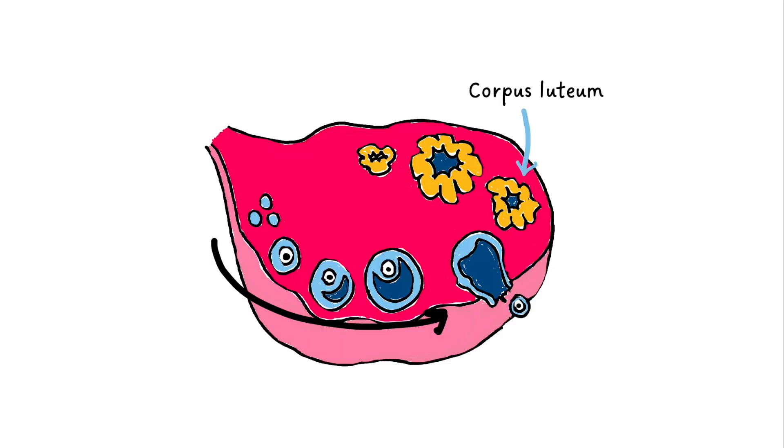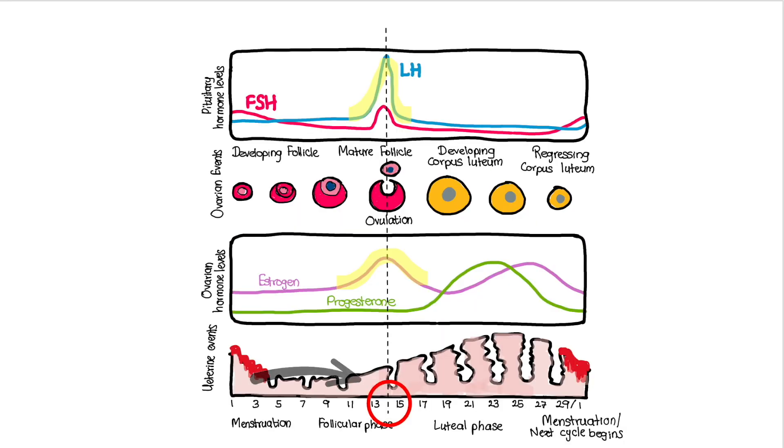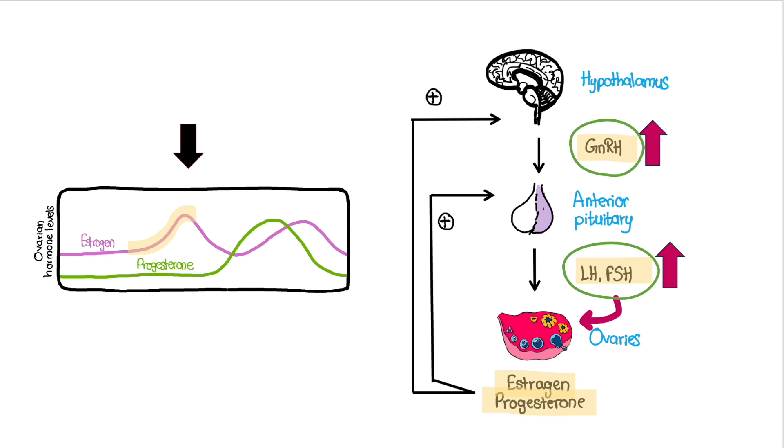When it comes to the corpus luteum formation, typically around day 14 in a 28-day cycle, there is a surge of LH secretion from the pituitary gland. This surge in LH is triggered by rising levels of estrogen. As the ovarian follicles mature, they produce increasing amounts of estrogen. When estrogen levels reach a certain threshold, they exert a positive feedback effect on the hypothalamus and pituitary gland.